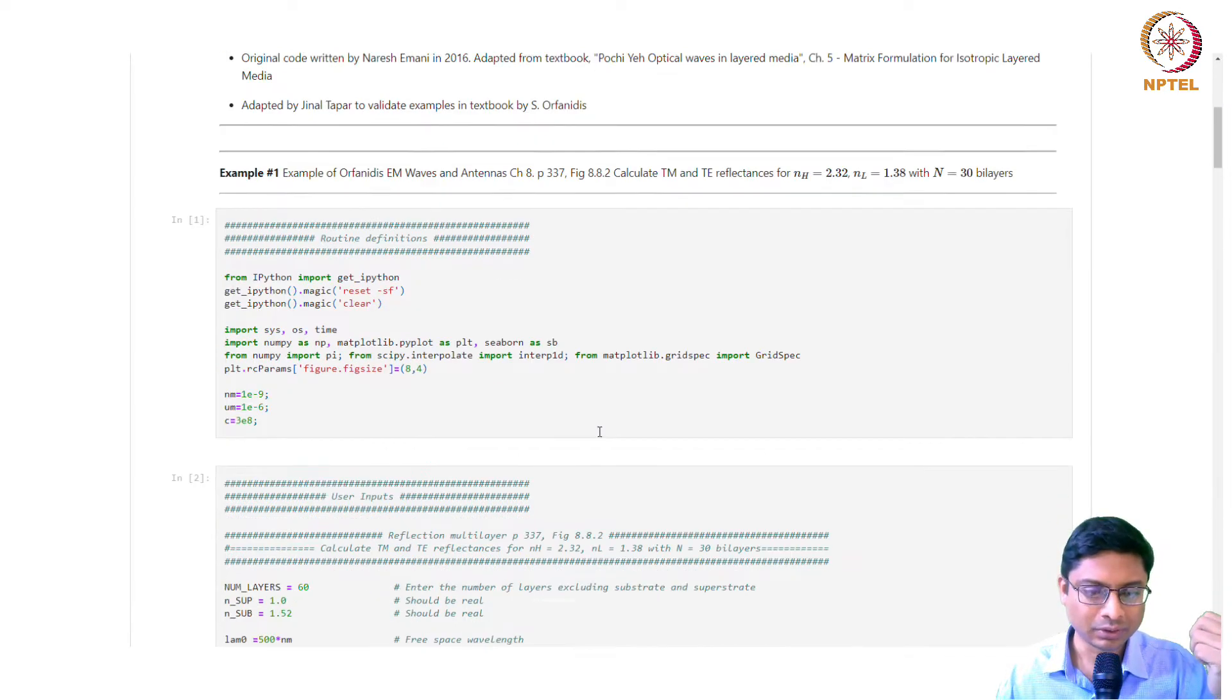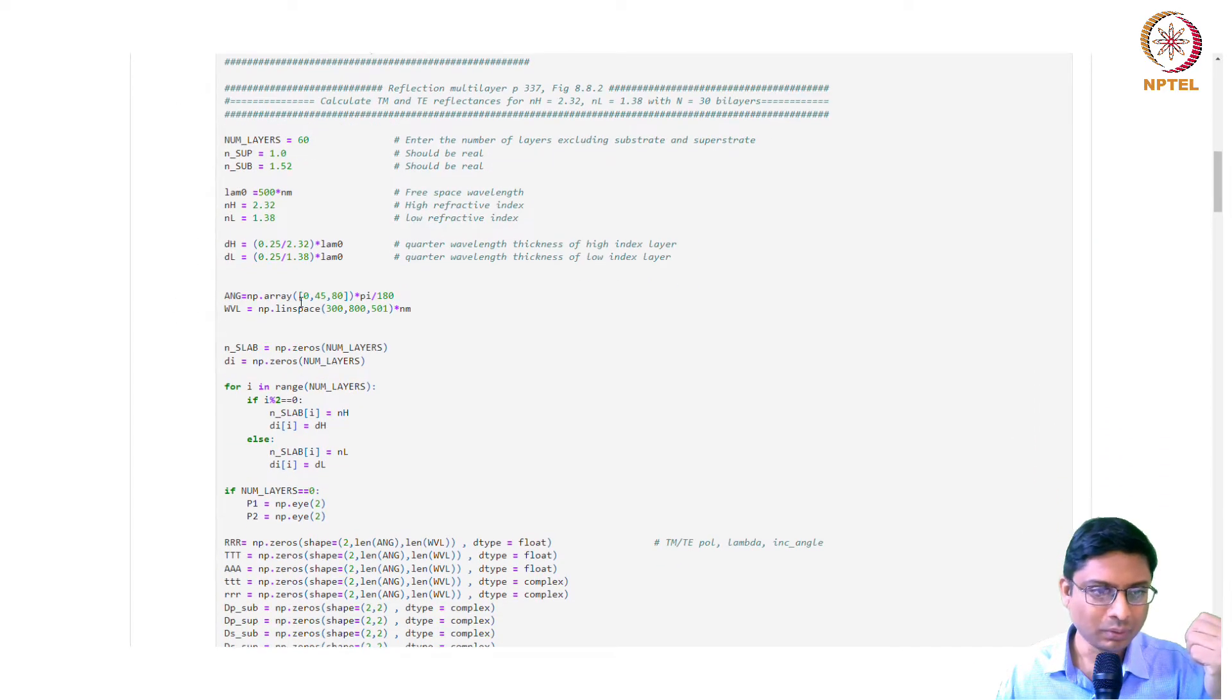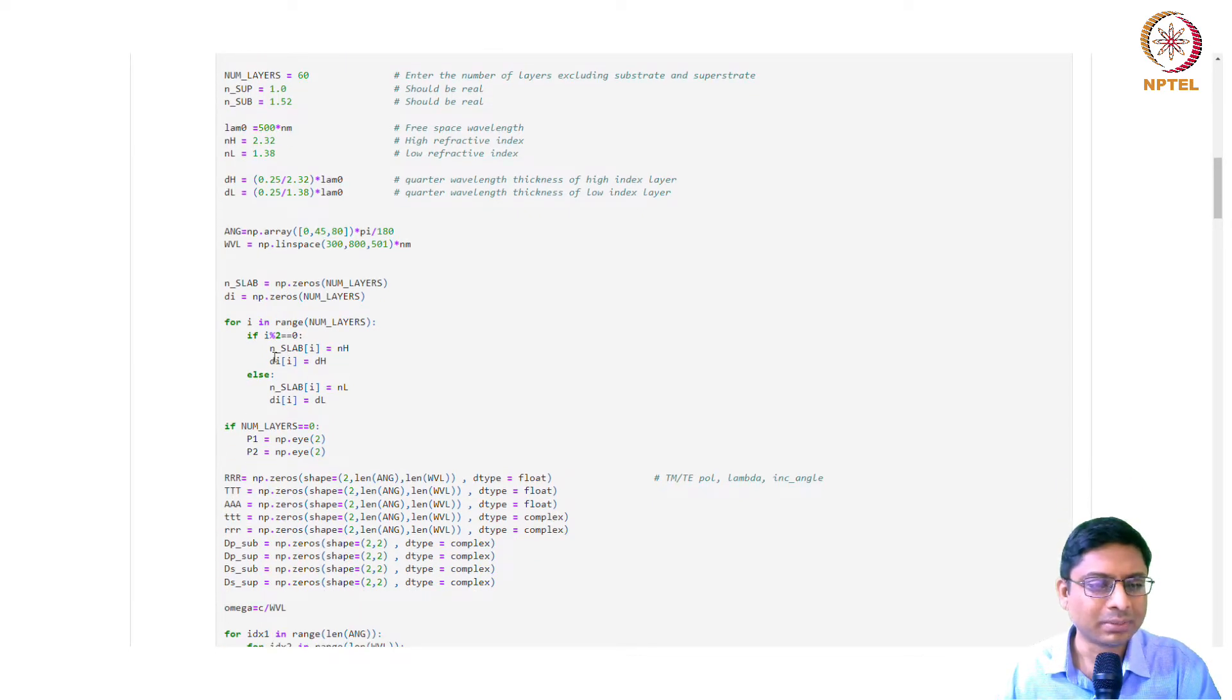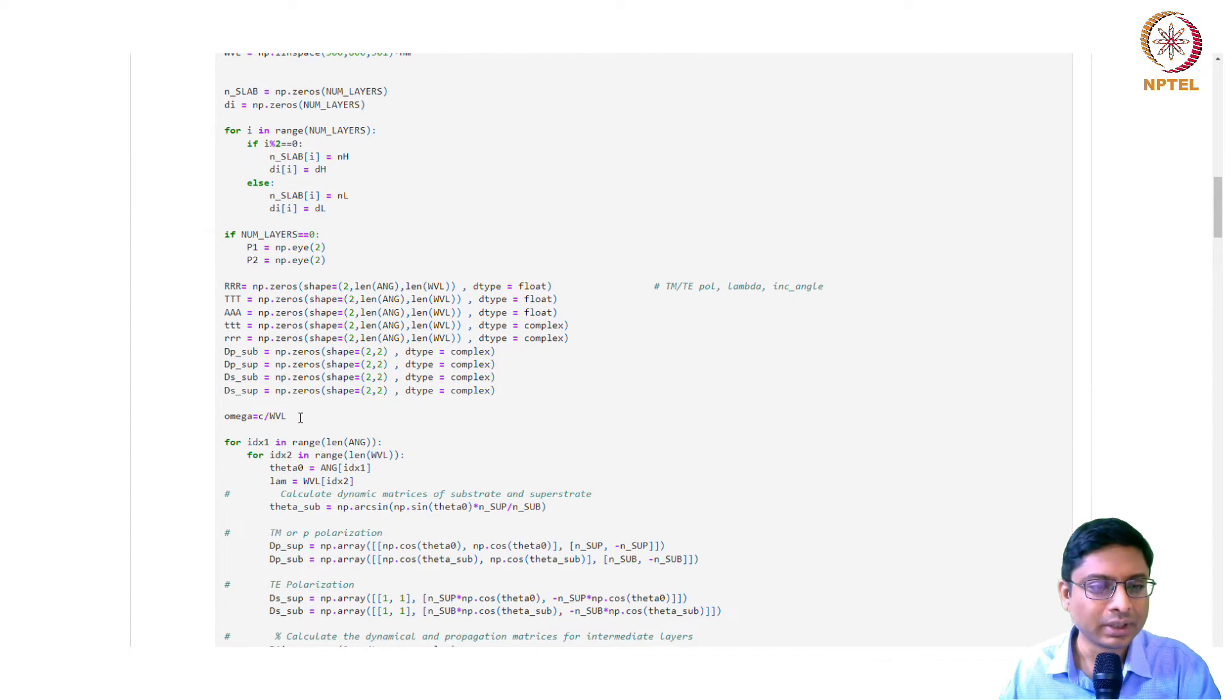Some examples are given here. This is for a particular case wherein we have reproduced the data provided in the textbook by Orphanidis. We try to take the same examples and look at how the output will be. You see there is a superstrate, substrate, the wavelength at which we want to calculate, and the high and low refractive indices.